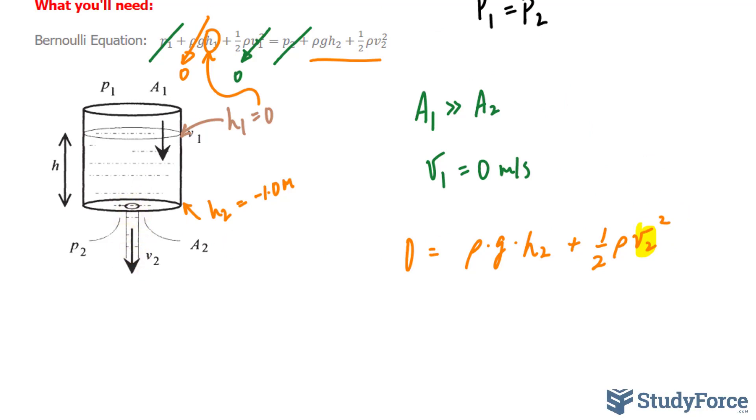Okay. Let's rearrange for V sub 2. We'll take this term over to the left side. And remember, it becomes negative. And on the right side, we have half rho V sub 2 to the power of 2.